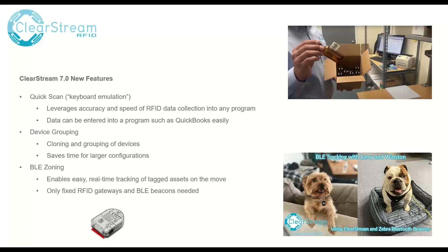A demo we did was a simple scanning of serial numbers onto a packing list within Clearstream, showing how you could previously type those values in manually or use a barcode scanner, but now take it to RFID and scan RFID tags for serialized data into something like QuickBooks or an older system that doesn't have RFID support built in. Device grouping allows you to take 100 devices, put them into a single group, and map that one group to a destination — effectively hooking up all 100 devices to the same database table so they're all configured in one shot.